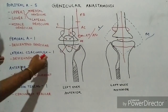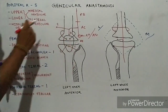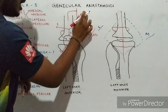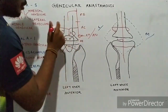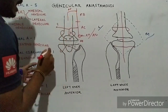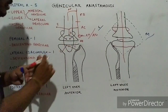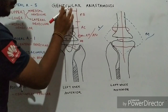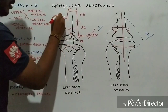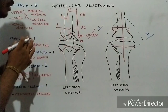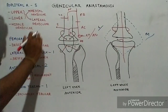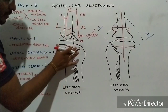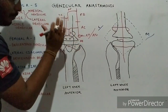The next artery which contributes to this anastomosis is the lateral circumflex artery. The profunda femoris artery is given off from the femoral artery when it lies in the femoral triangle, and from this profunda femoris artery the lateral circumflex artery arises from its lateral side. From the lateral circumflex artery, a descending branch comes down and joins the anastomosis in front of the patella.